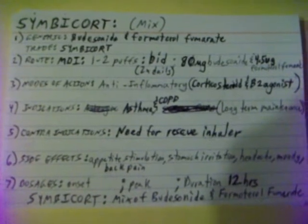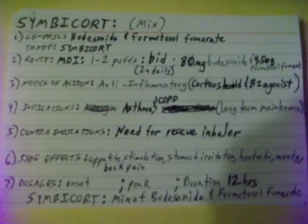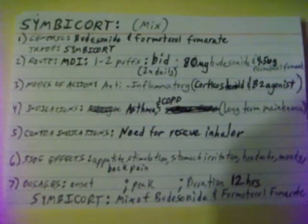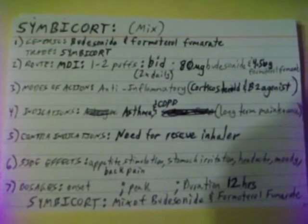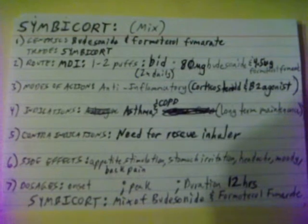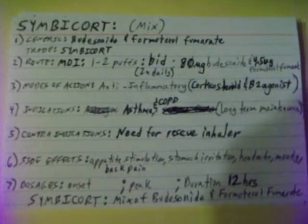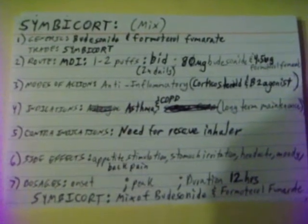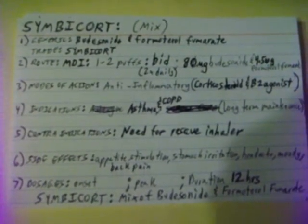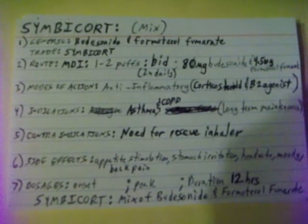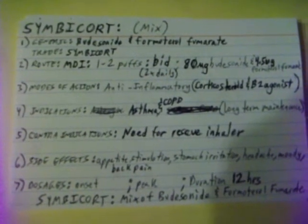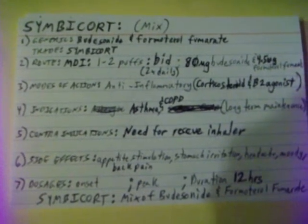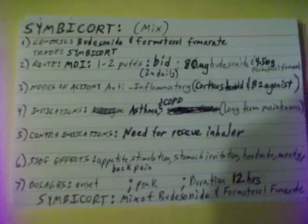Symbicort is a mixture of Budesonide and Formoterol Fumarate. The trade name is Symbicort. The route is metered dose inhaler, one to two puffs, twice daily, BID. The dose is 80 micrograms of Budesonide and 4.5 micrograms of Formoterol Fumarate.